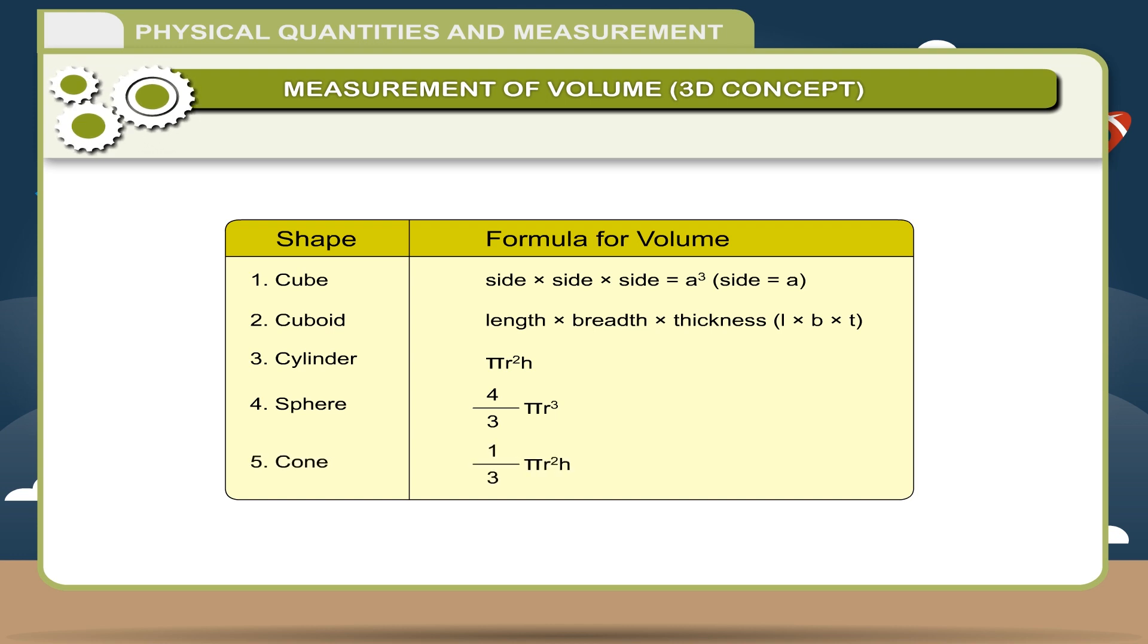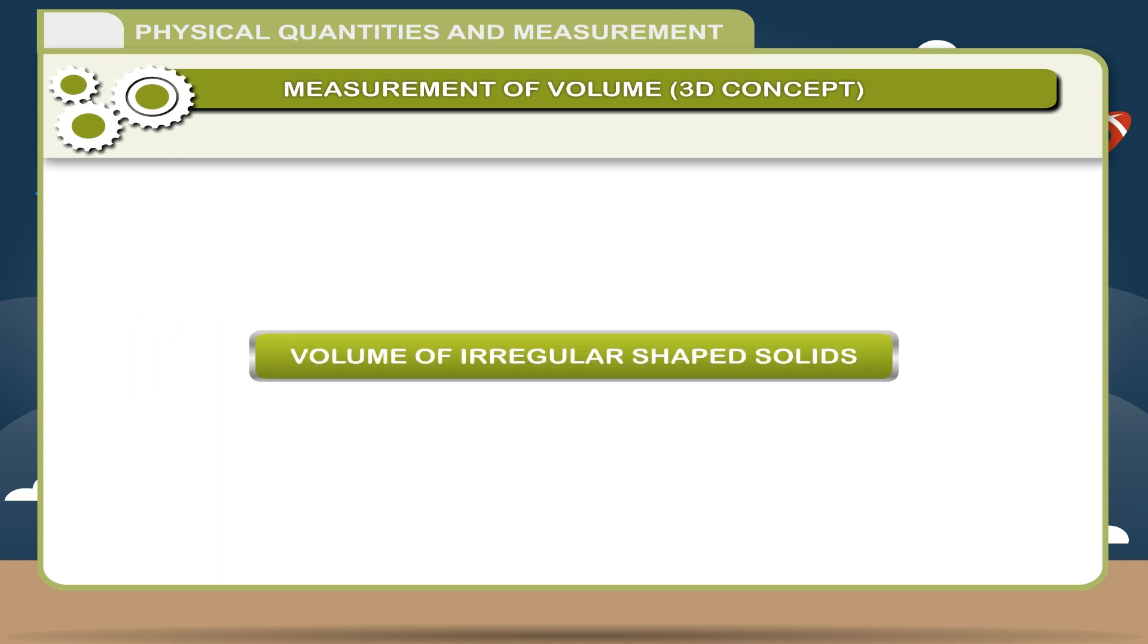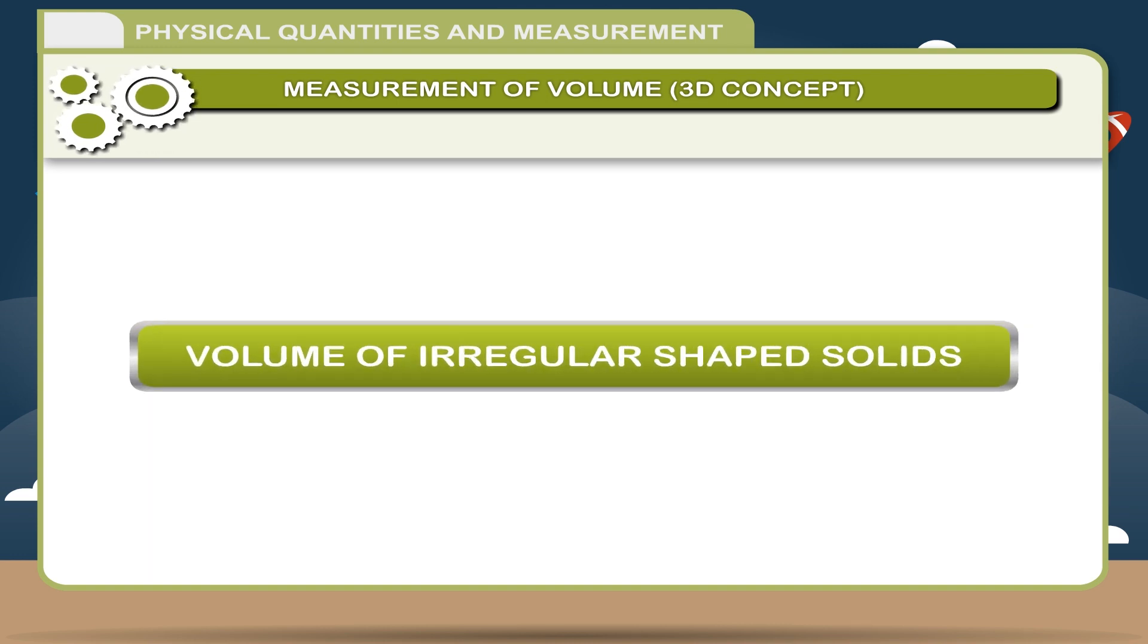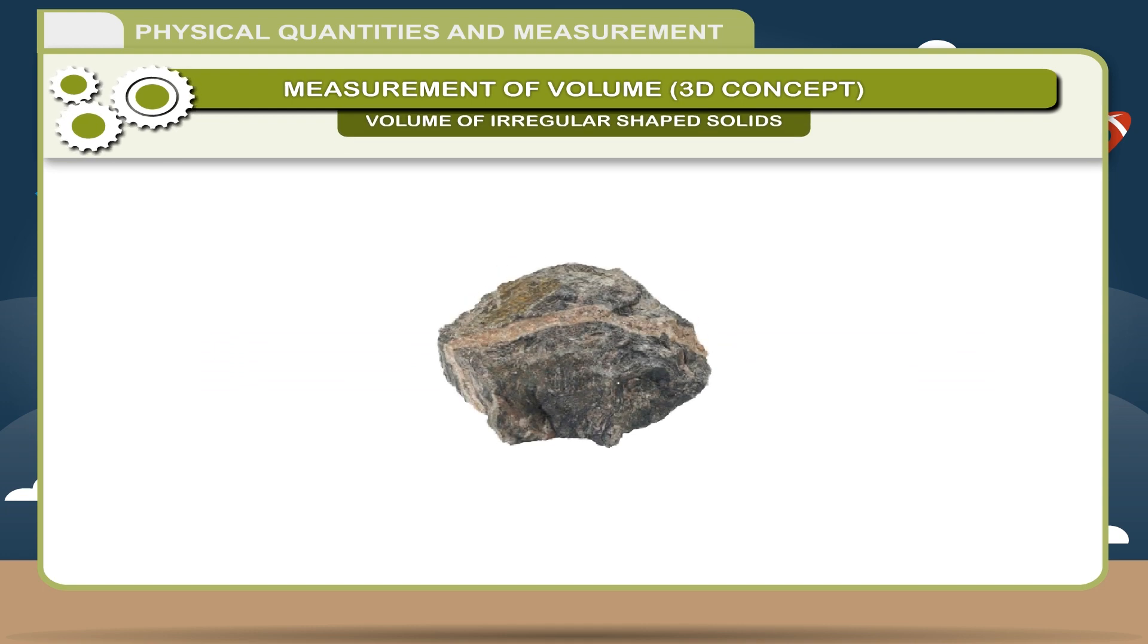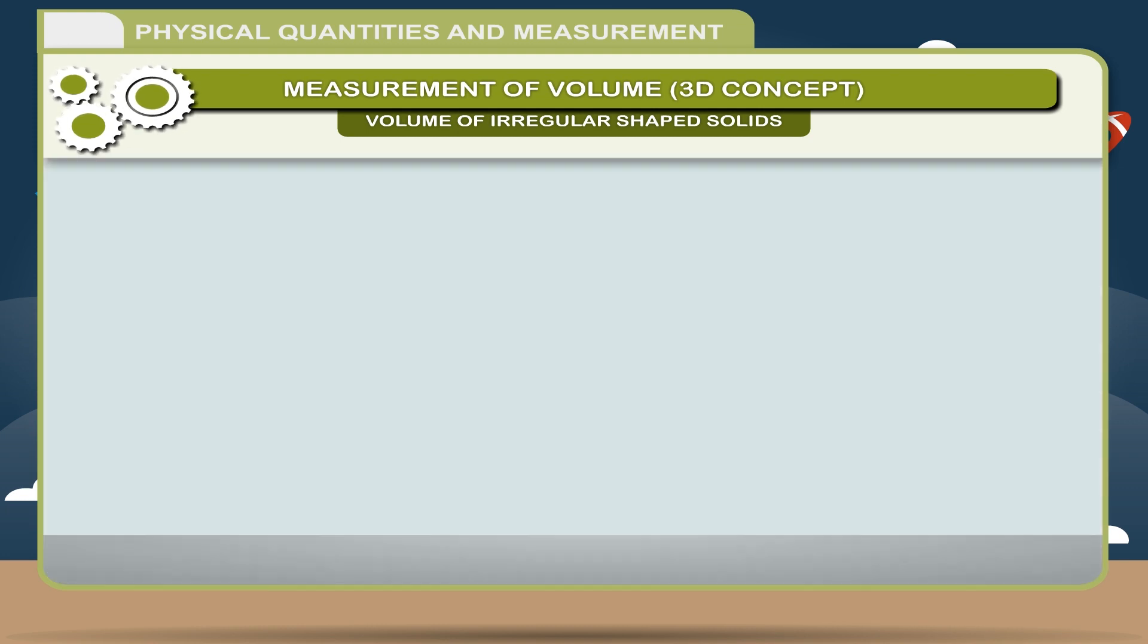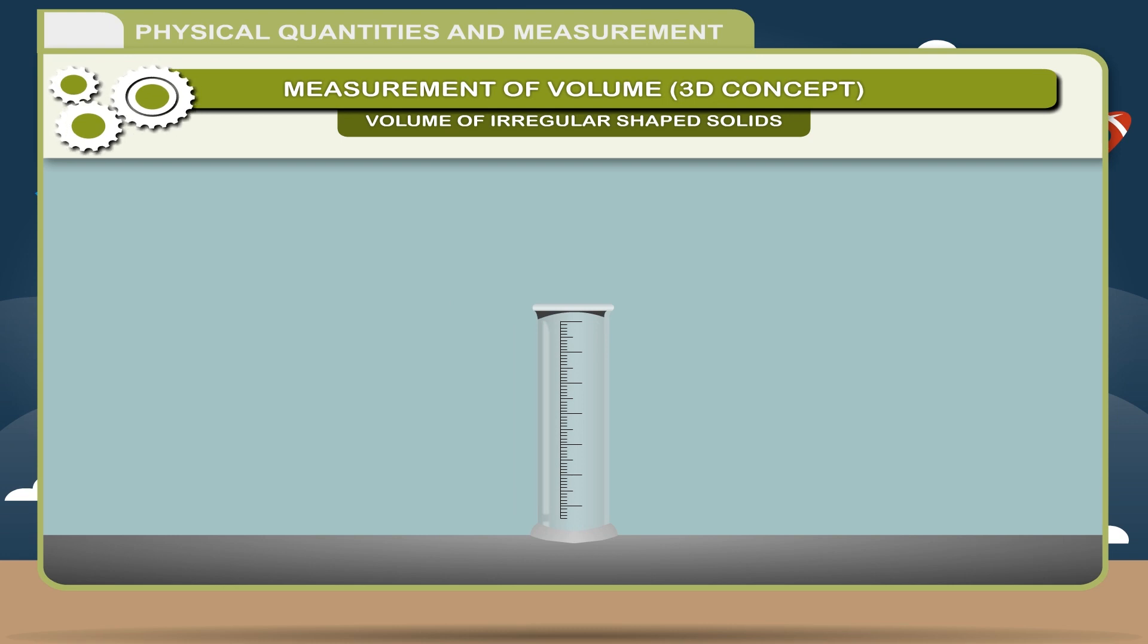Volume of irregular shaped solids. The bodies which have no regular shape are known as irregular shaped bodies. The volume of such bodies cannot be found by using any mathematical formula. For this we use measuring cylinders. The method of volume measurement is known as displacement method discovered by Archimedes.